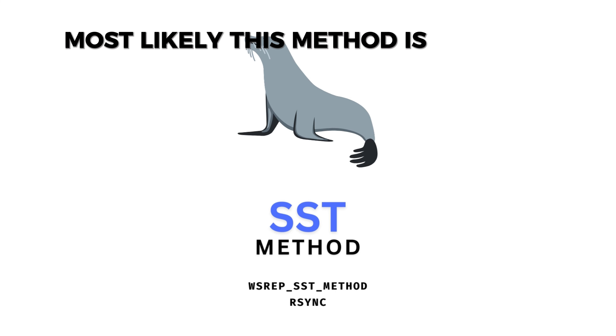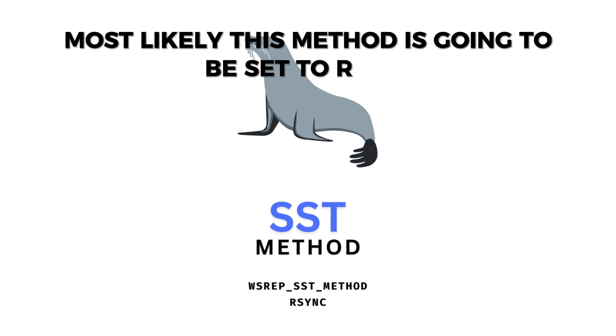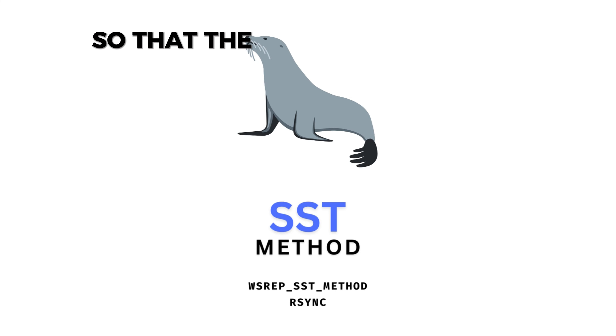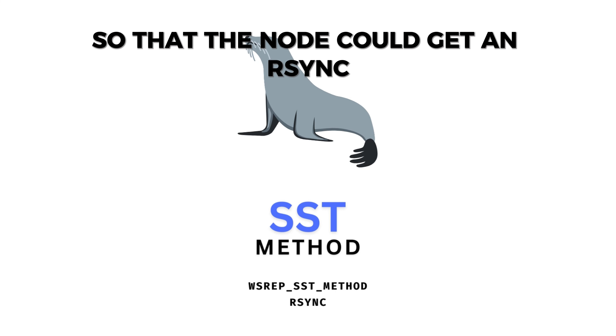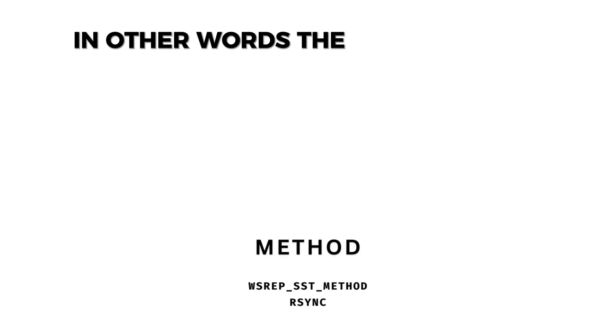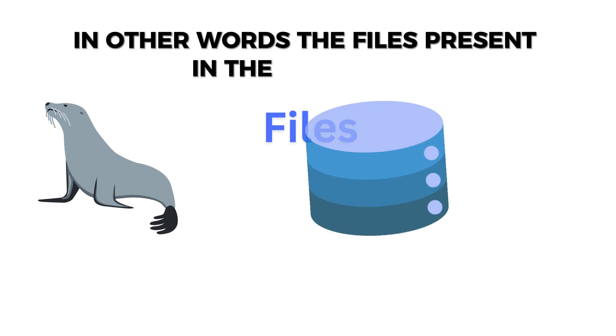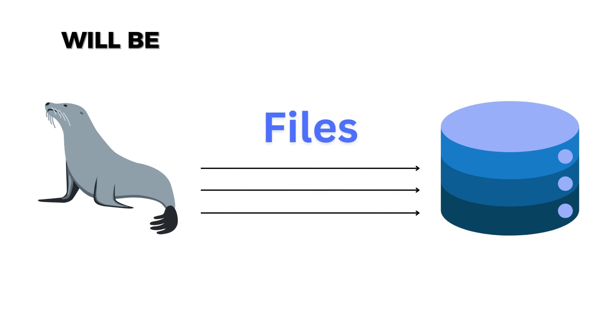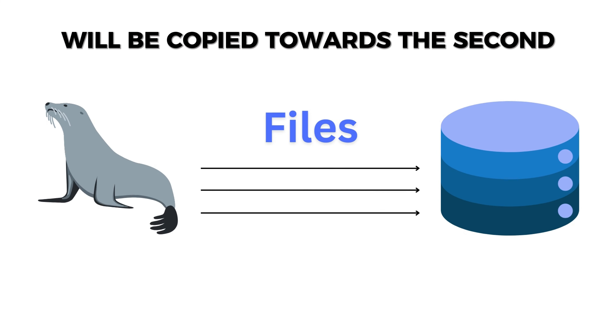Most likely this method is going to be set to rsync, so that the node could get an rsynced copy of the data directory. In other words, the files present in the first node will be copied towards the second node.